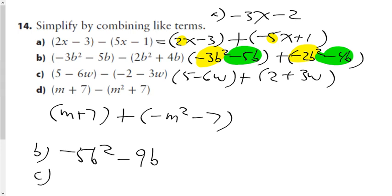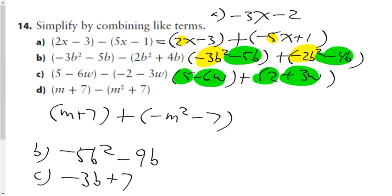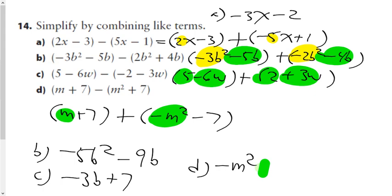For part c: gather the highest degree terms first — those two make negative 3b, and the constants make a positive 7. For part d: gather the m-squared first — negative m-squared — then plus m. A negative 7 and a positive 7 make zero, so we end up with negative m-squared minus m.